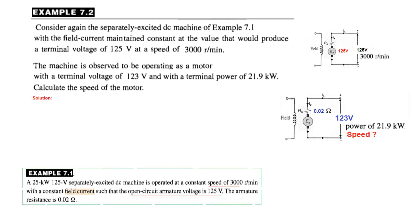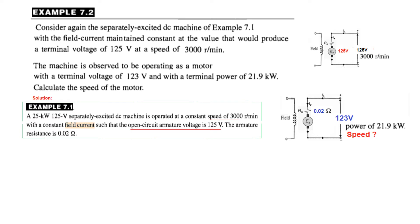Now let's see what was question 7.1. A 25 kilowatt 125 volt separately operated DC machine operated at a constant speed of 3000 revolutions per minute with constant field current such that the open circuit armature voltage is 125 volt. So when we're talking about the circuit to be open circuit, this is armature voltage and this is the terminal voltage. Now this is the formula that we are going to use to calculate the speed.